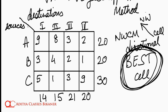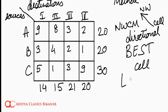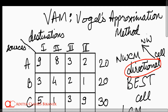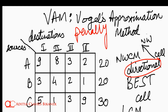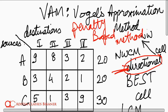Then another method was LCM, which told us to go to the least cost cell. So while NWCM was a directional method, LCM was a cost-based method. Today we will talk of this new technique called VAM, which is basically a penalty-based method. So NWCM is directional, LCM is cost-based, while VAM is a penalty-based method.